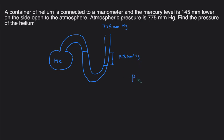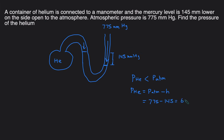Since the atmosphere line is lower, the atmosphere is pushing more strongly down than the helium, so the pressure of helium is less than atmospheric pressure. The pressure of helium equals the pressure of the atmosphere minus the height difference: 775 − 145 = 630 mmHg. Both values are already in mmHg, so no conversion is needed. The final pressure of helium is 630 mmHg.